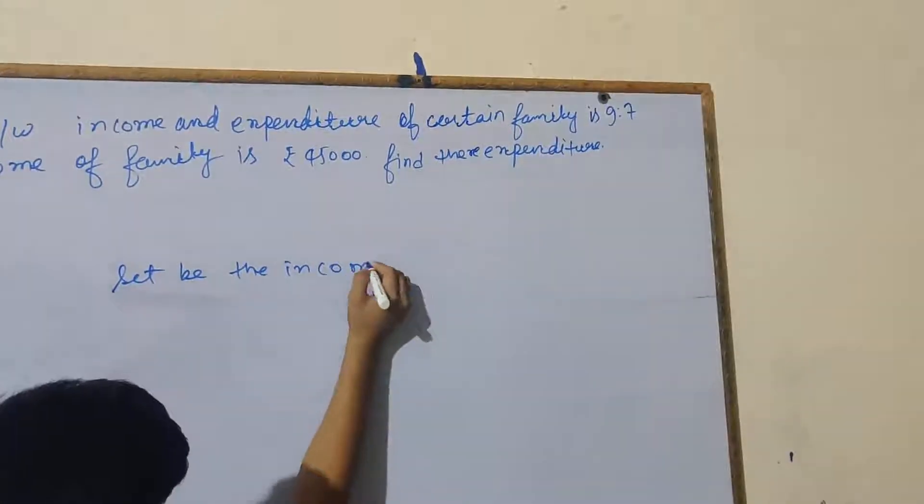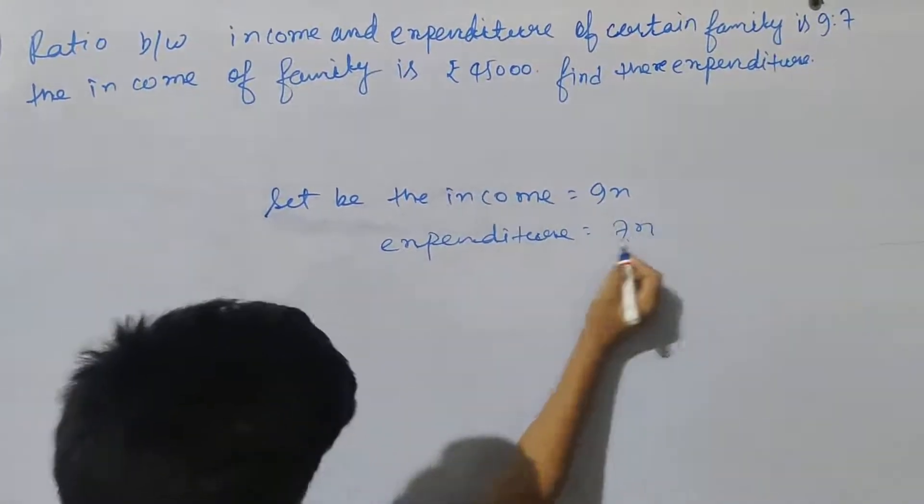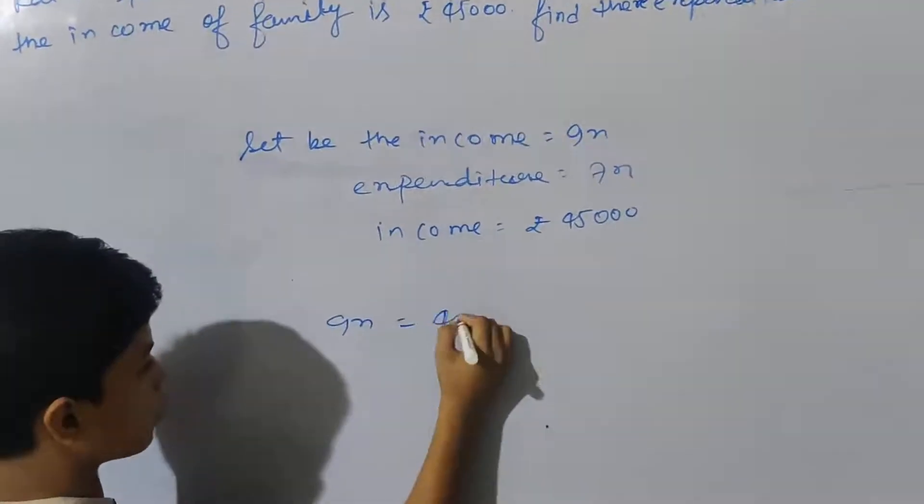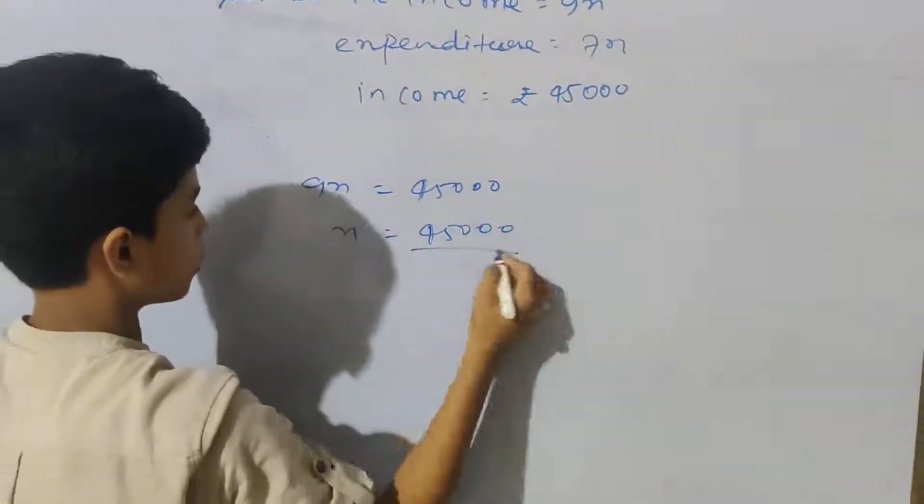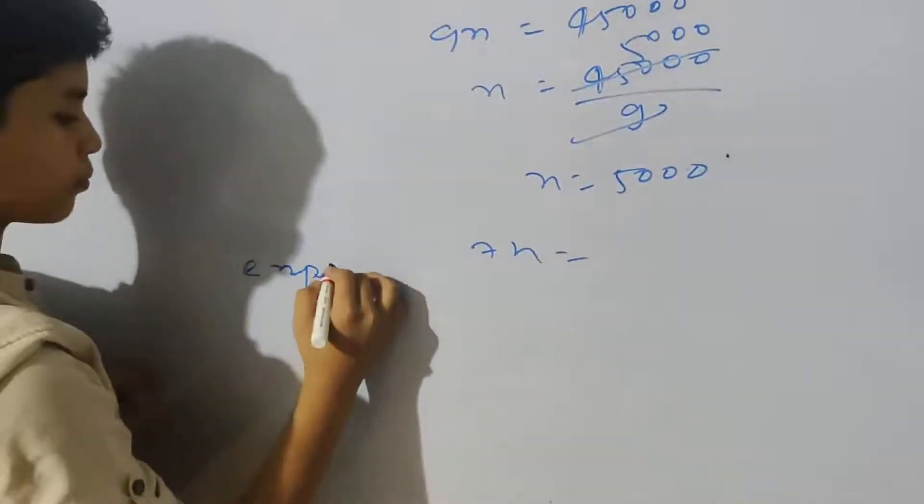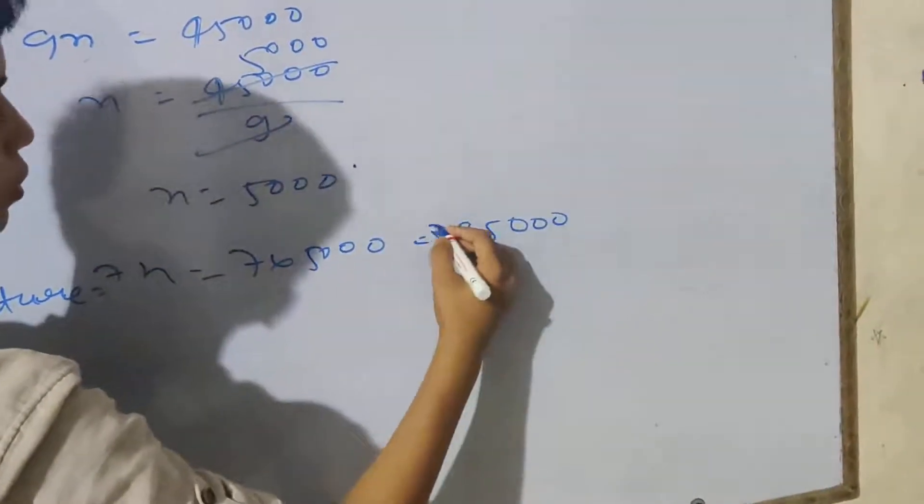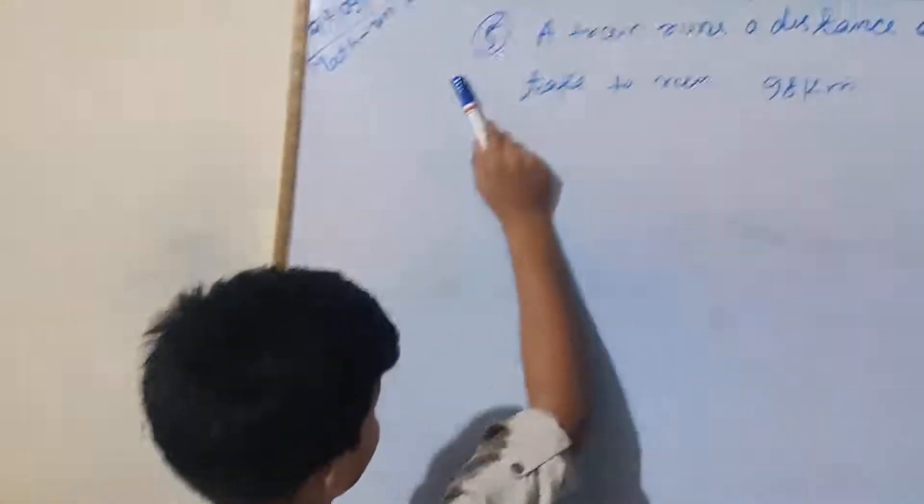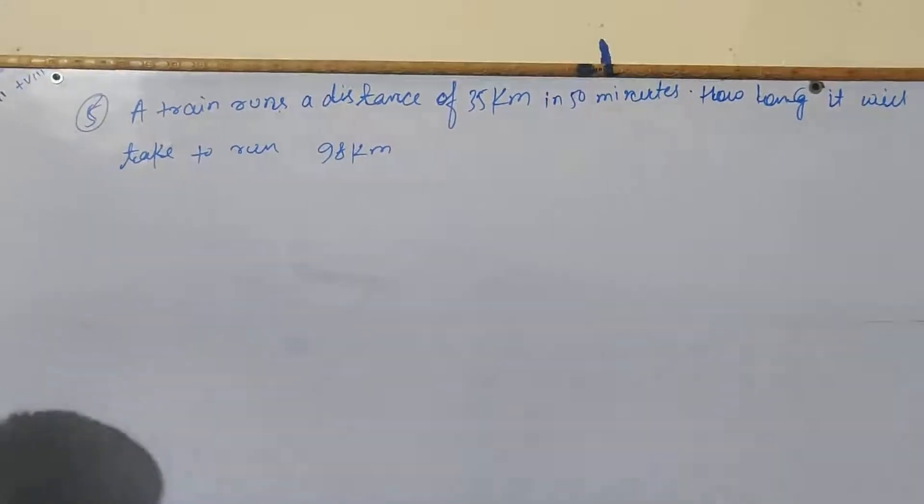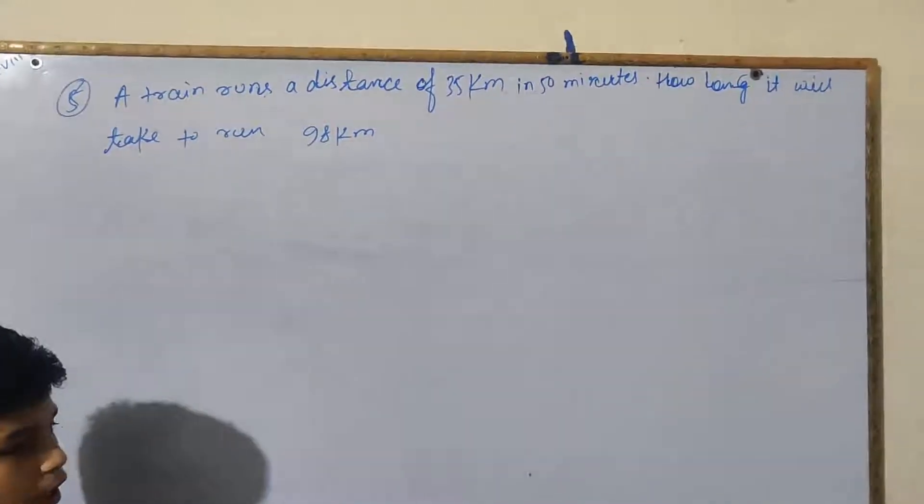Let's move on to the next question. The ratio between income and expenditure of a family is 9:7. The income of the family is 45,000. What is the expenditure? Let the income equal 9X and expenditure equal 7X. Income equals 45,000, so 9X equals 45,000. X equals 45,000 divided by 9, which equals 5,000. Expenditure is 7X, which equals 35,000.